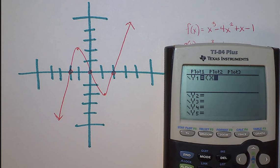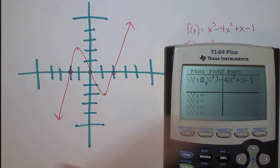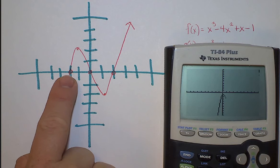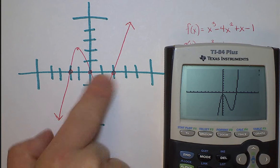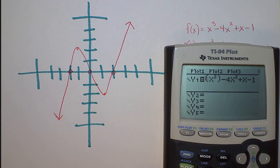So I'm typing in x to the third, minus 4x squared, plus x, minus 1. Does it have an x-intercept? Nope, doesn't have a... This is not the function. I know it's not f.